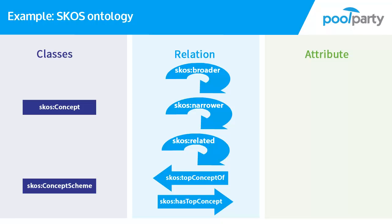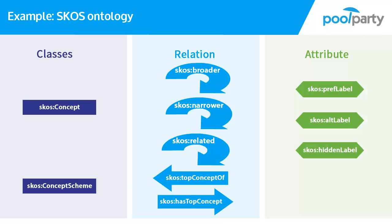There are more relations defined in the SKOS ontology and you will get to know more of them in other sessions of this e-learning course. Let's have a look at the SKOS attributes. In the SKOS ontology there are a number of attributes defined, and all SKOS labels are attributes. In PoolParty, skos:prefLabel, skos:altLabel and skos:hiddenLabel are all attributes of the skos:Concept class.